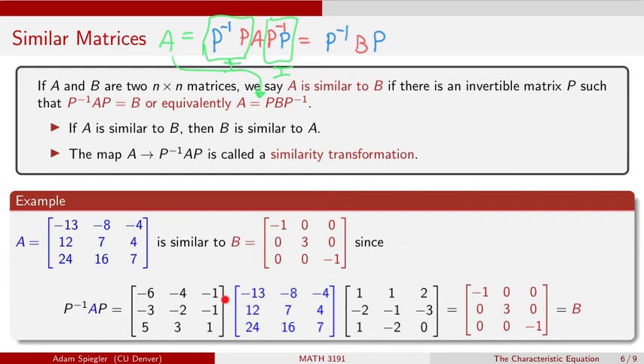You can verify that P⁻¹ times P gives the identity matrix, and similarly P times P⁻¹ also gives the identity matrix.